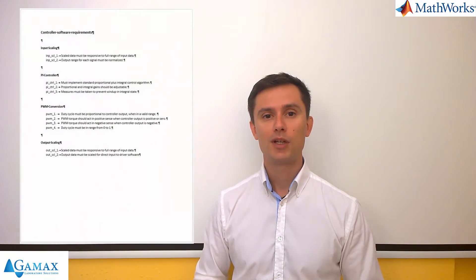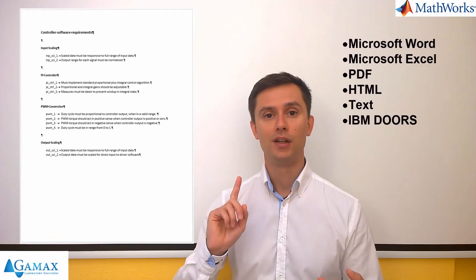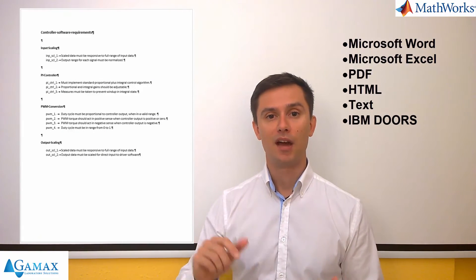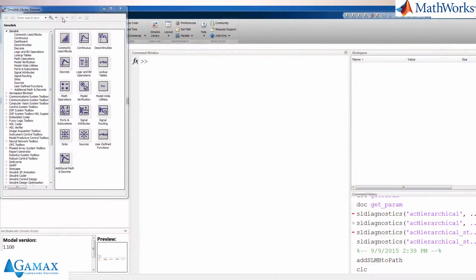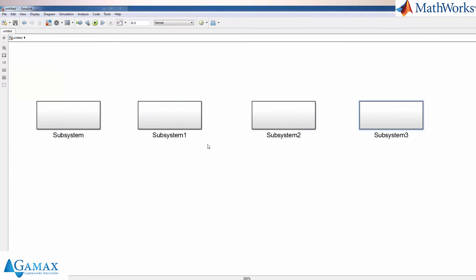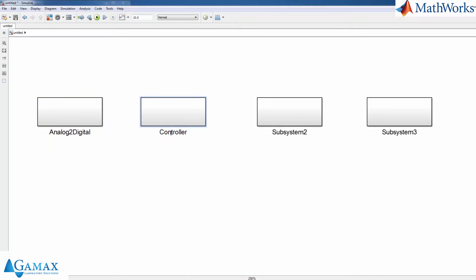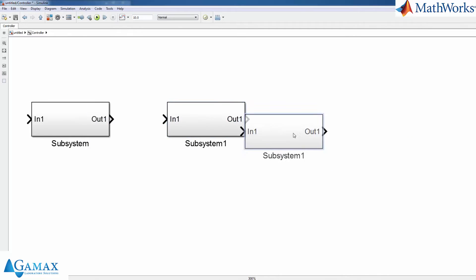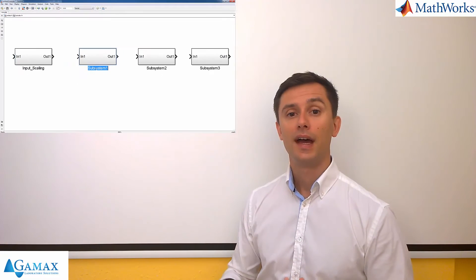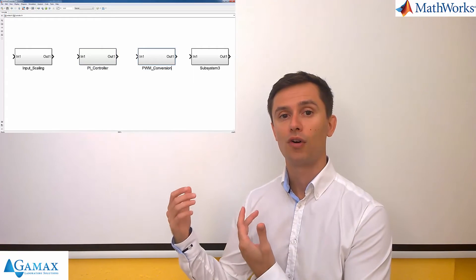Now, how do we start to build a model like this? Usually we have some kind of requirements. These requirements could be in DOORS, they could be in Word, Excel, PDF, HTML, and so on. We open up the requirements, we also open up a new Simulink model, and we just drag and drop empty subsystem blocks into our system. We name each block properly, and we also add subsystem blocks inside of those subsystem blocks. In this way, at the end, we have a structure that is the same as the structure of our final model — however, clearly this model doesn't do anything yet.